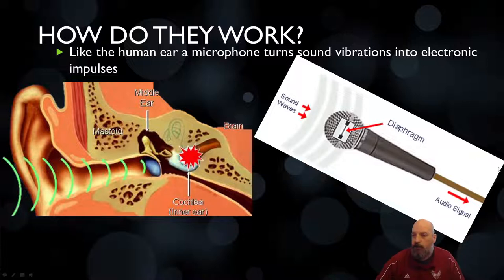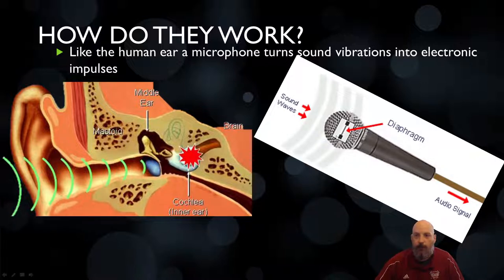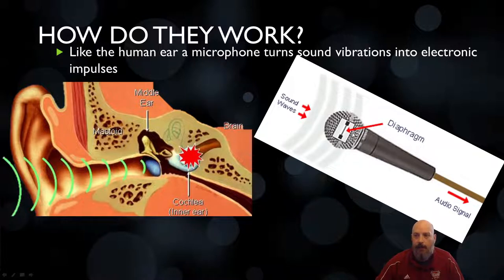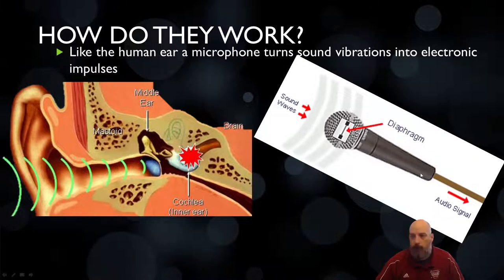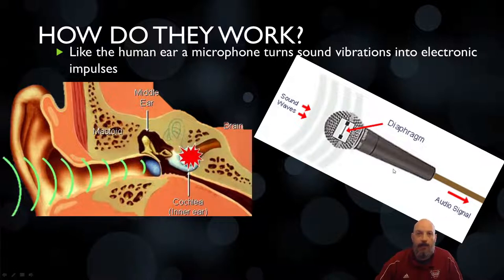A microphone works the same way, or pretty similar at least. Sounds and vibrations are passed through to a filter in the microphone known as a diaphragm, which is a narrow filament that can pulse and detect vibrations. There are sensors and chips attached to the diaphragm that save those vibrations as an audio signal. That audio signal gets passed through the microphone cable or through a wireless transmitter, and it is then saved into a format where it can be reproduced.